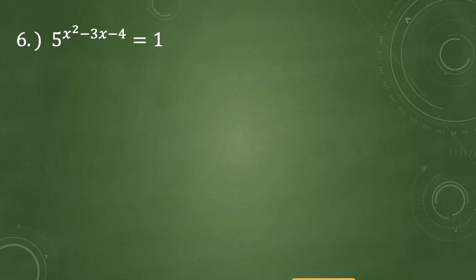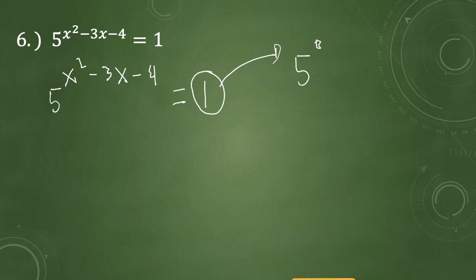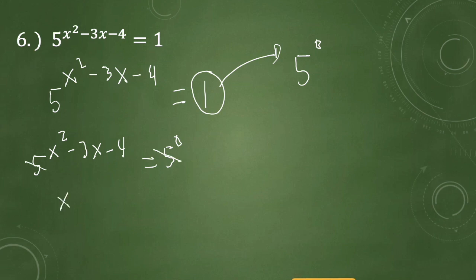For example number 6, we have 5 raised to x squared minus 3x minus 4 equals 1. Since any number raised to 0 is 1, we rewrite 1 as 5 raised to 0. So we have 5 raised to x squared minus 3x minus 4 equals 5 raised to 0. Since we have the same base, we drop 5 and are left with the exponent x squared minus 3x minus 4 equals 0.